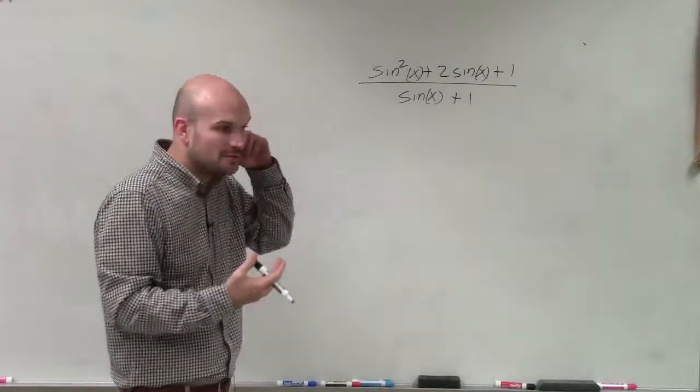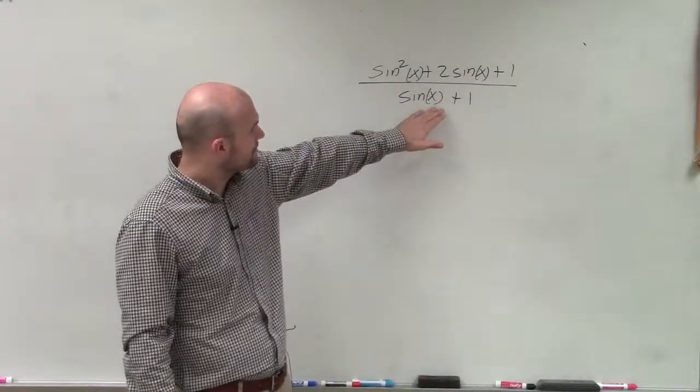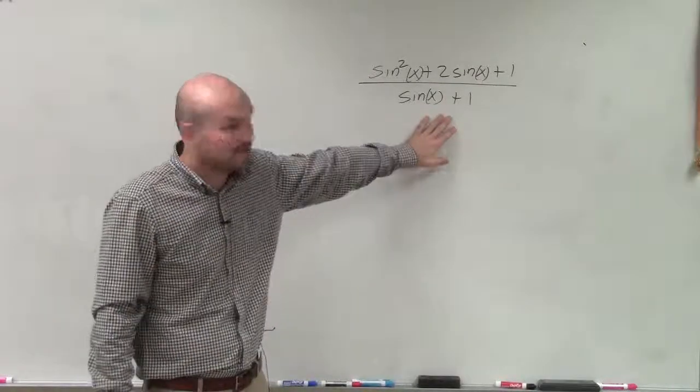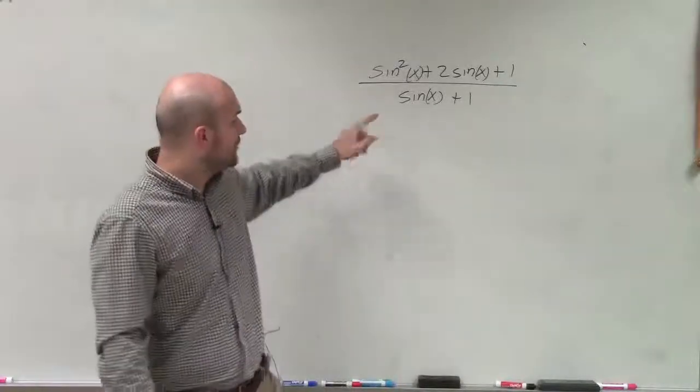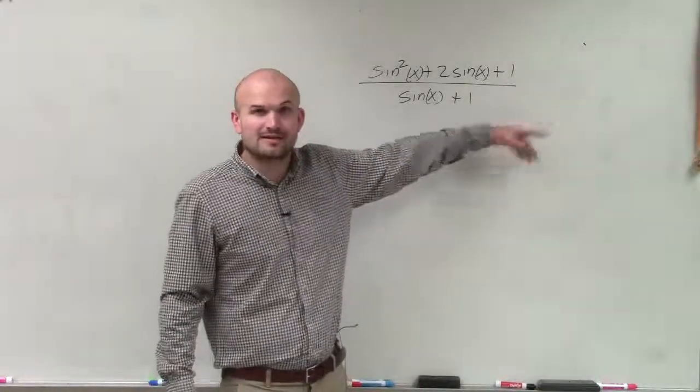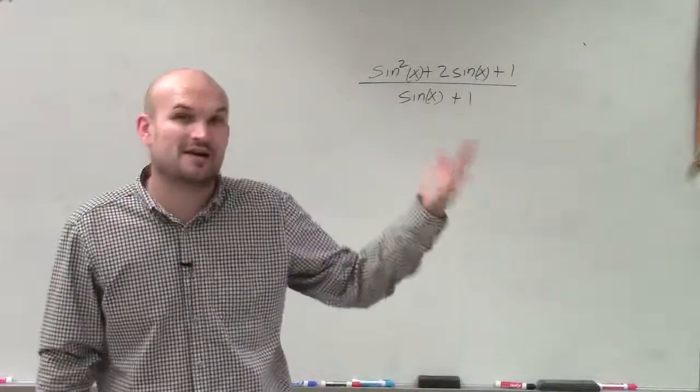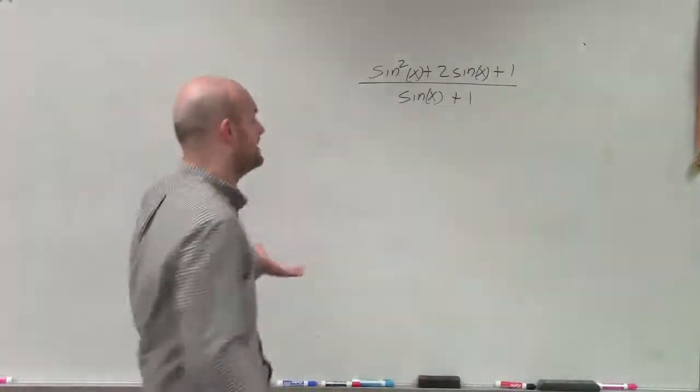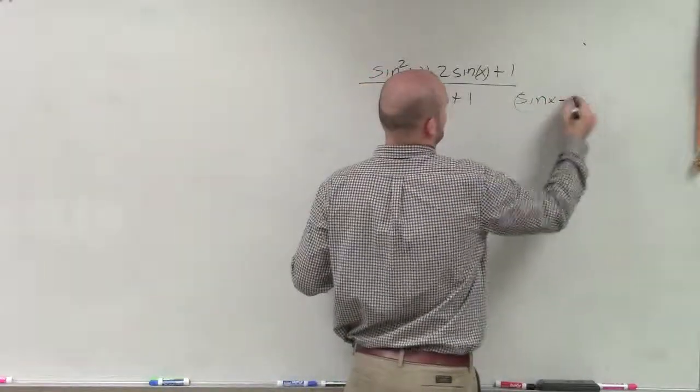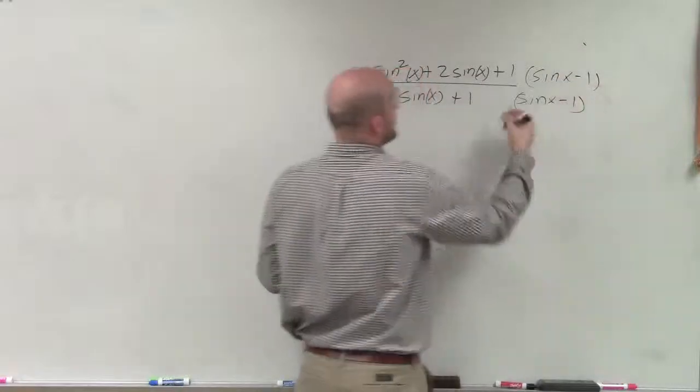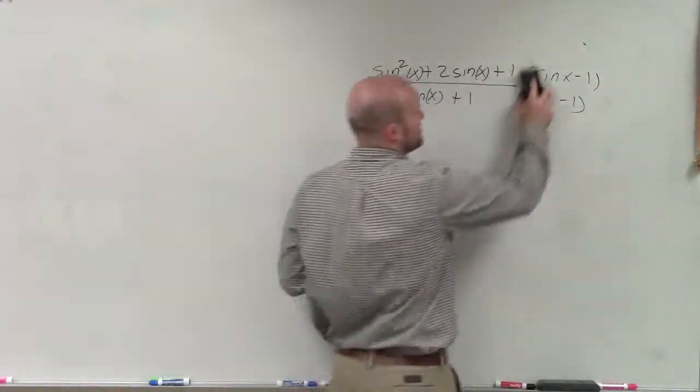A couple of ways I've talked about going through this, especially when we have a binomial on the bottom in terms of our trigonometric functions, we can multiply by the conjugate to get a Pythagorean identity. We could still do that, but I don't really want to multiply sine of x minus 1 on the top and bottom just because that works. Then I have to multiply binomial times a trinomial, and it just doesn't look like it's going to be fun.